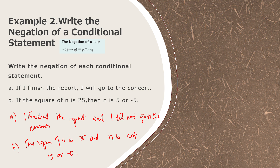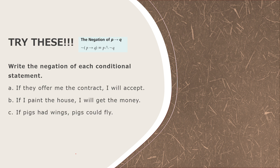That's how to write the negation of a conditional statement. Try these at home: write the negation of each — 'If they offer me the contract, I will accept'; 'If I paint the house, I will get the money'; 'If pigs had wings, pigs could fly.' Thank you for listening about negation of conditional statements.